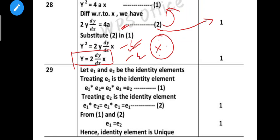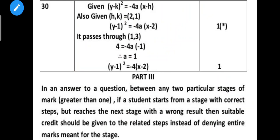Next, e1, e2 - identity element. We have the identity element in the form: e1 * e2 = e2, e1 = e1. So if you have e1 as identity element or e2 as identity element, then e1 equals e2. That's why you have to prove it - that is one mark. So totally two marks. Next, 30th question: point substitution in the equation - one mark for that.